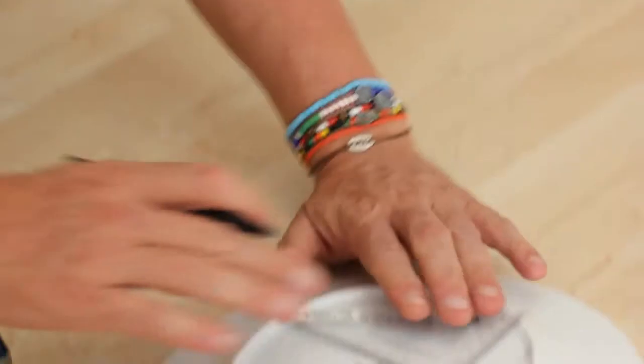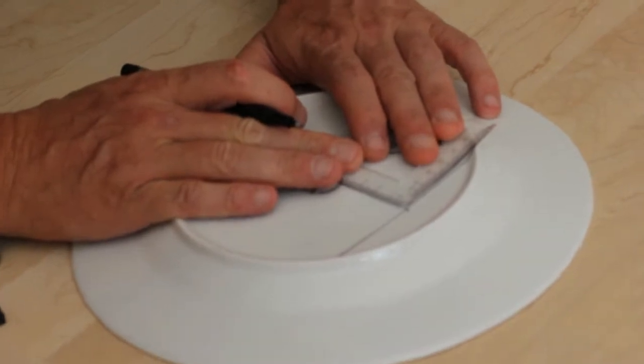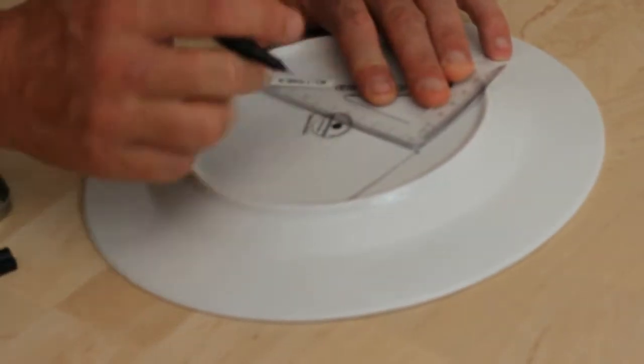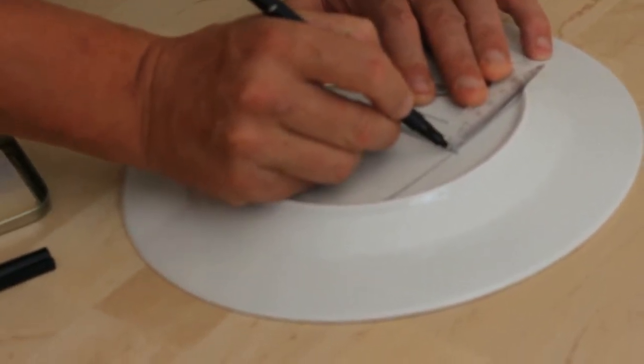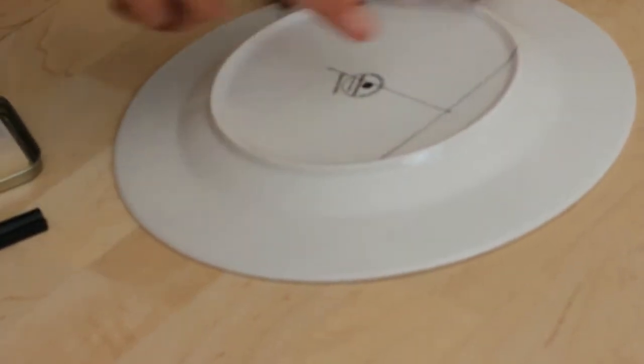Then we take a set square and we draw a right angle from the chord at the middle point of the chord. So that's a right angle that will be here. So the center is somewhere along that line.